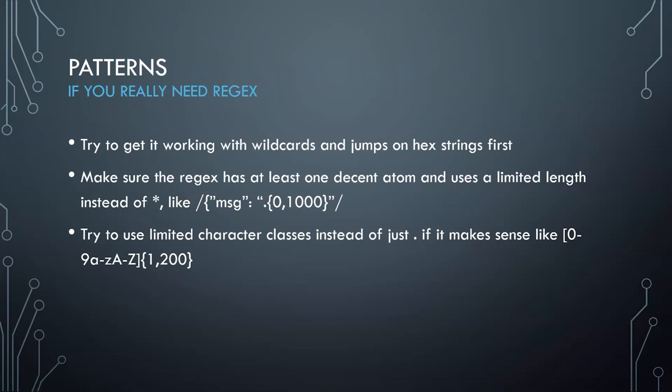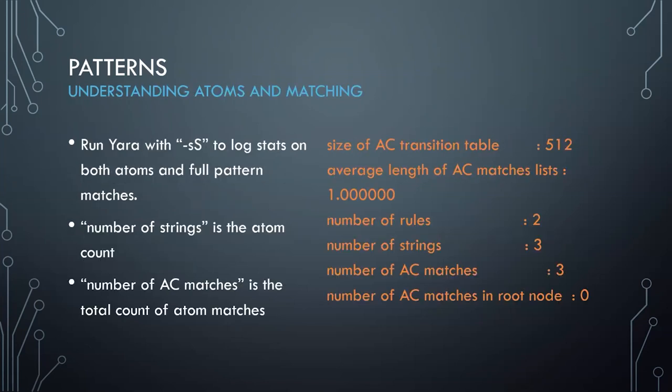If you know the content will only be alphanumeric, limit the character class as well. These two things will help make the regex run a lot faster, but it's still not going to be nearly as fast as wildcards or jumps. You can debug this by running YARA with the -s flag, which outputs statistics on the number of atoms selected and how many matches you're actually getting.